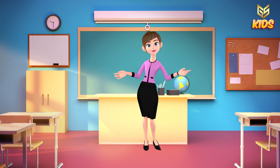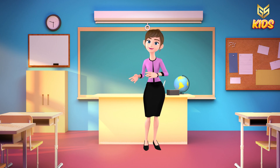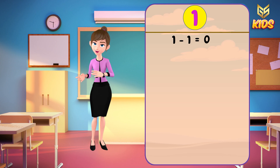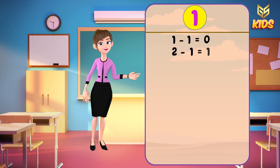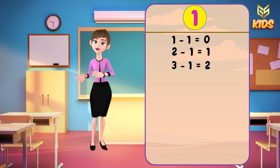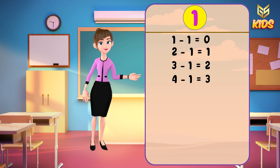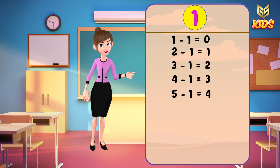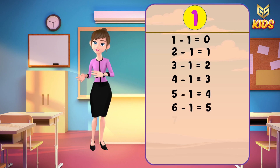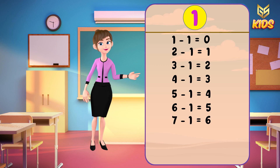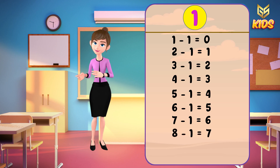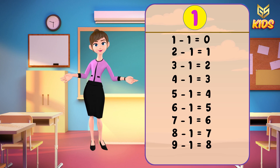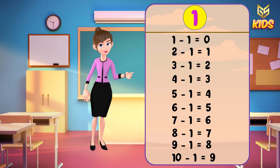I hope you have understood table number 1 — the subtraction table. If not, let's sing it together again. 1 minus 1 is equal to 0. 2 minus 1 is equal to 1. 3 minus 1 is equal to 2. 4 minus 1 is equal to 3. 5 minus 1 is equal to 4. 6 minus 1 is equal to 5. 7 minus 1 is equal to 6. 8 minus 1 is equal to 7. 9 minus 1 is equal to 8. And 10 minus 1 is equal to 9.